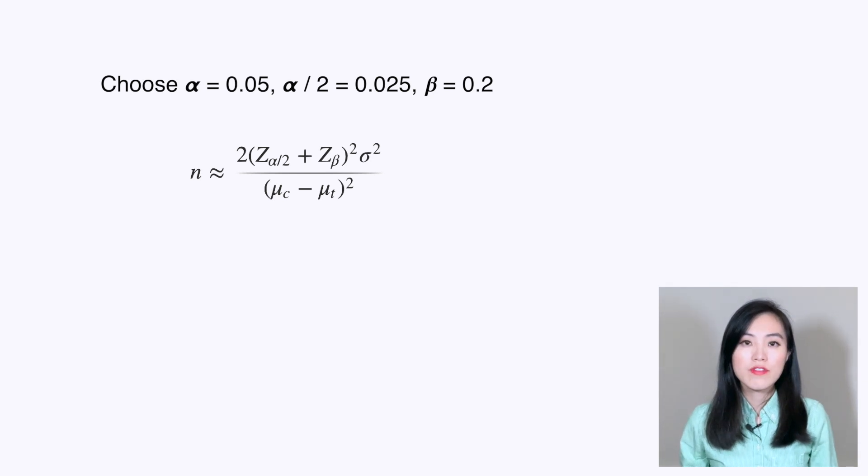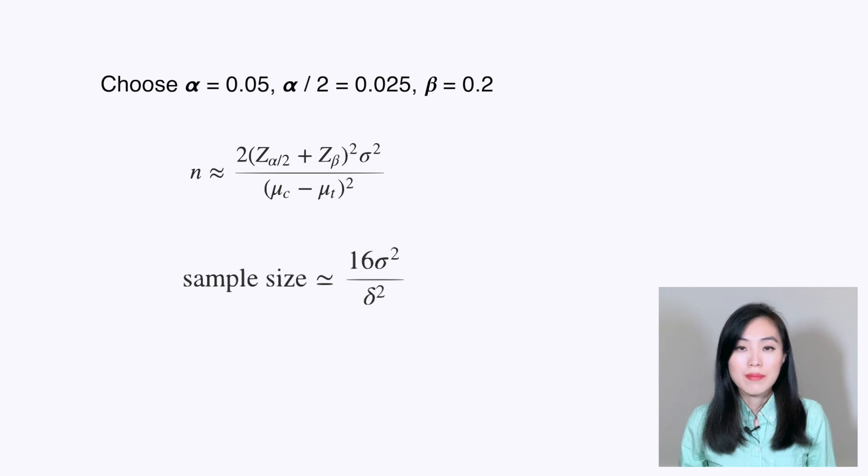Typically we choose α = 0.05, so α/2 = 0.025, and β = 0.2. Using a z-score table, we find that z_{α/2} and z_β are -1.96 and -0.84 respectively. So (z_{α/2} + z_β)² is close to 8. That's how we obtain the rule of thumb formula: n ≈ 16σ²/δ².